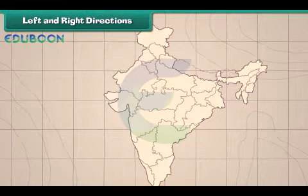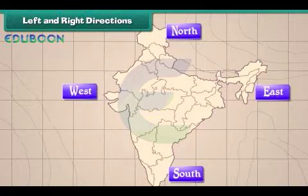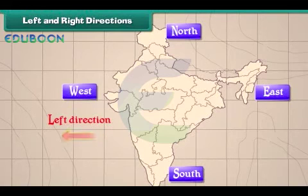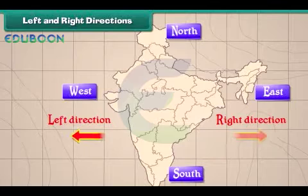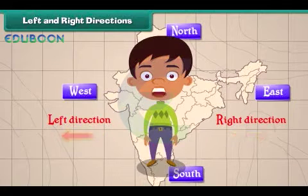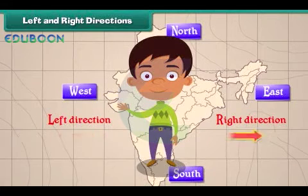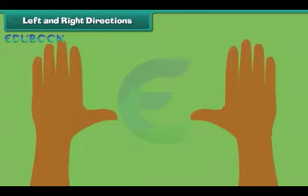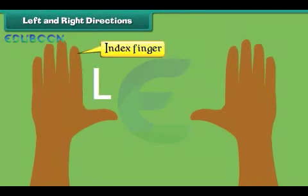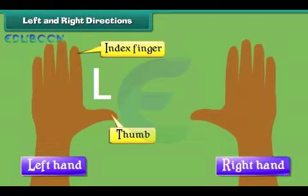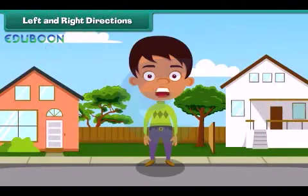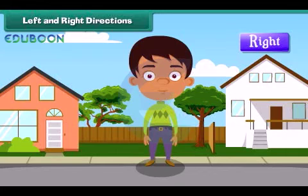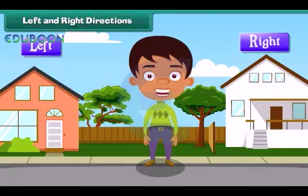In addition to north, south, west and east, we also use left and right directions to locate a place. We use our hands to indicate the left and right directions. The hand that makes the letter L when the index finger and thumb are stretched out is our left hand, and the other one is our right hand. The places towards our right hand are said to be on the right and those towards our left hand are said to be on the left.